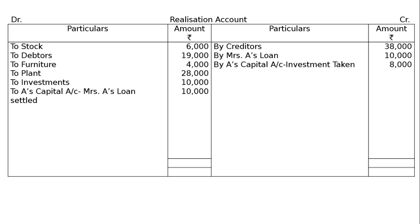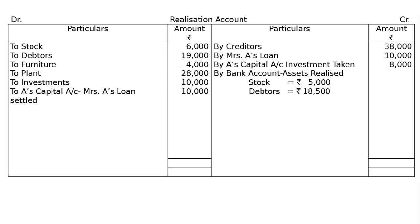Next, By Bank Account — Assets Realized. The assets realized are: Stock Rs.5,000, Debtors Rs.18,500, Furniture Rs.4,500, Plant Rs.25,000. The total amounts to Rs.53,000. This is Bank Account debited to Realization Account.